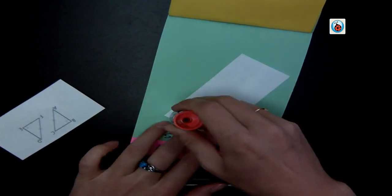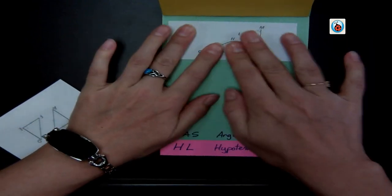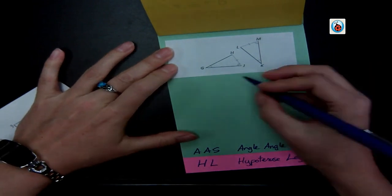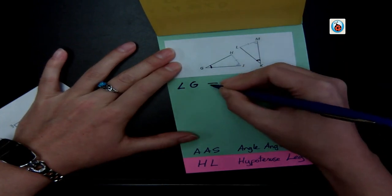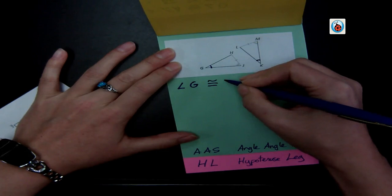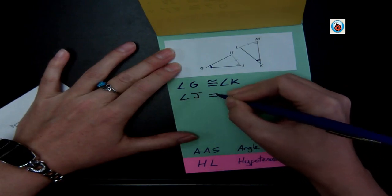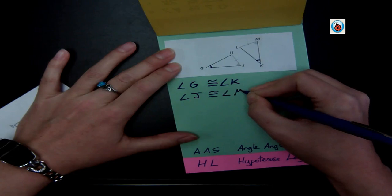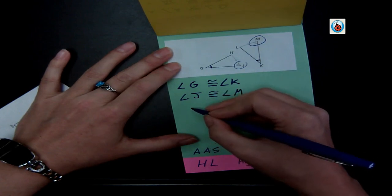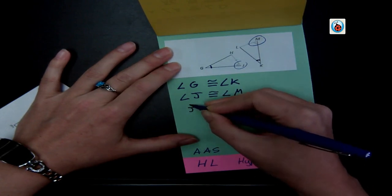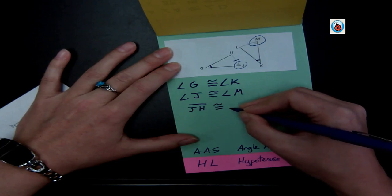And so I'll glue this one on and mark my angle G as the one mark. It's congruent to angle K with one mark. This time there's no side in between them, so I'll go to my second angle. So J is congruent to angle M, those ones marked for me. And then the side JH is marked with this mark here, is congruent to side ML.